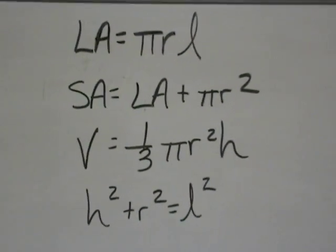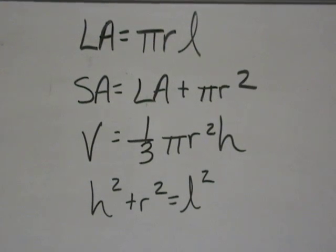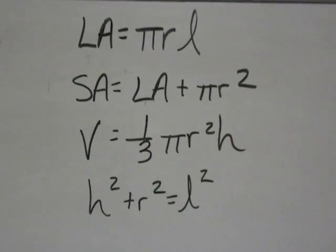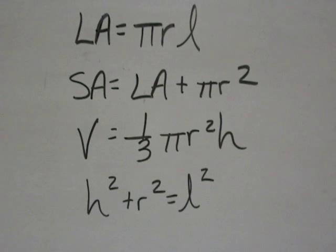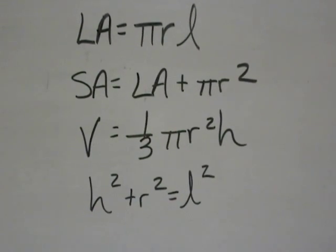And we need to remember the Pythagorean theorem. Remember that the true height and the radius create the legs of the right triangle inside the cone. So H squared plus R squared will be equal to L squared.